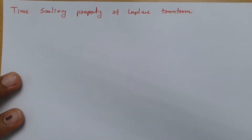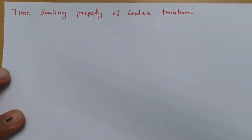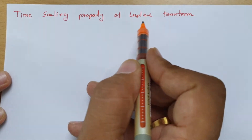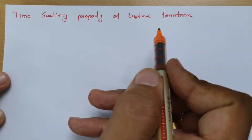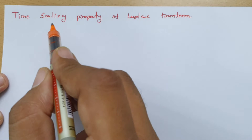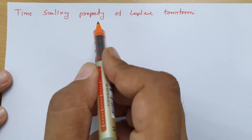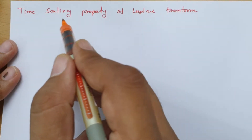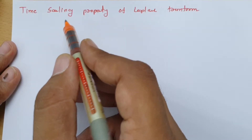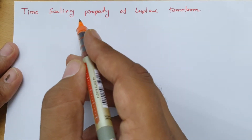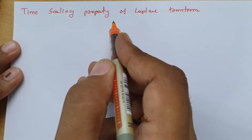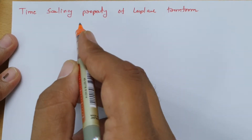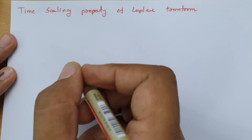Welcome to signal and system lecture series. Here in this session, I will be going to explain the time scaling property of Laplace transform. First I will define what is time scaling property, then we will derive that property, and at the end I will solve an example based on time scaling property, so it will be clear how we can apply that property to solve problems based on Laplace transform.